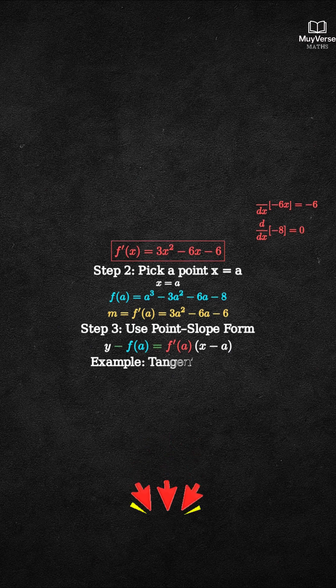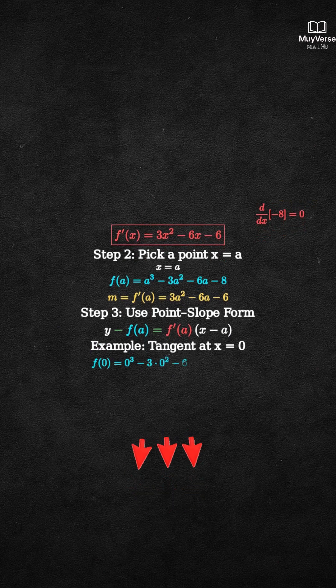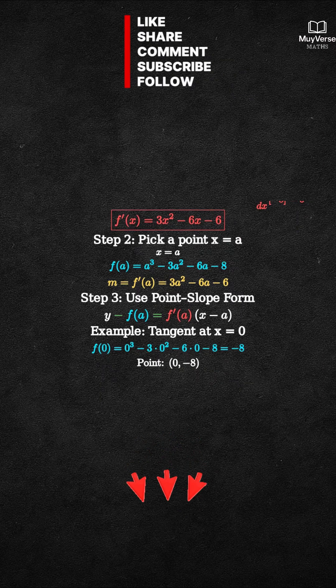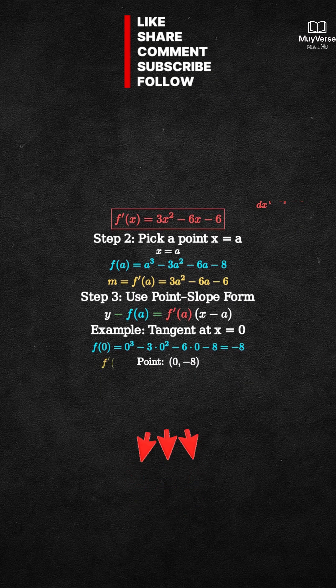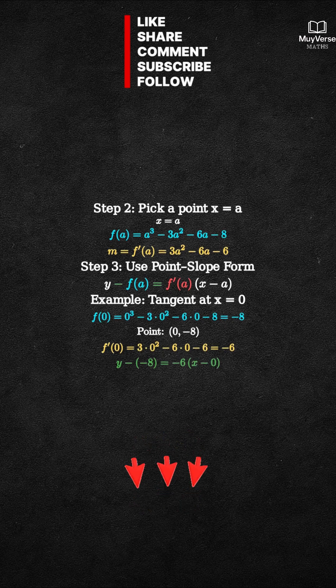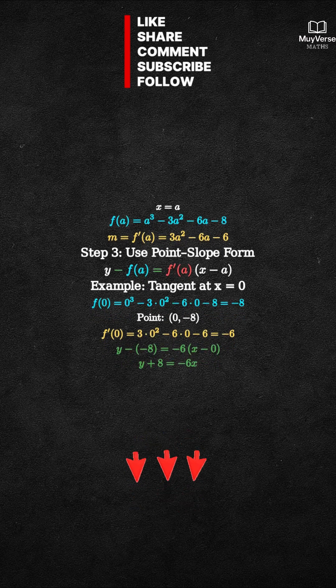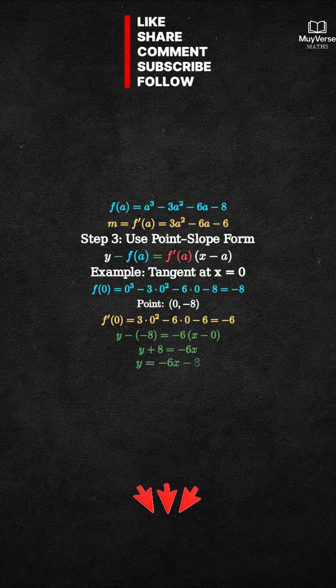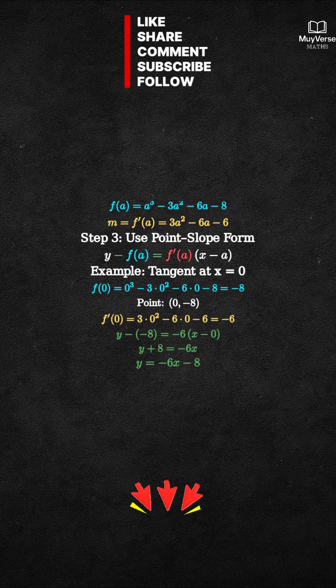Example at x equals 0. First, the point: f(0) equals negative 8. Next, the slope: f prime of 0 equals negative 6. Now, write the tangent line: y minus negative 8 equals negative 6 times x minus 0. That is y plus 8 equals negative 6x. So, y equals negative 6x minus 8.